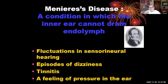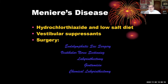Meniere's disease is a condition in which the inner ear cannot drain endolymph. You get fluctuations in the ability to hear, episodes of dizziness, tinnitus, and a feeling of pressure in the ear. Its treatment is a diuretic and a low-salt diet. You can use vestibular suppressants, though they sometimes cause more problems than they help, and there are sets of surgeries. If you make the diagnosis, the person should probably go to see an ENT surgeon.